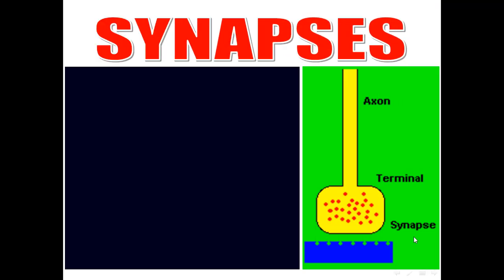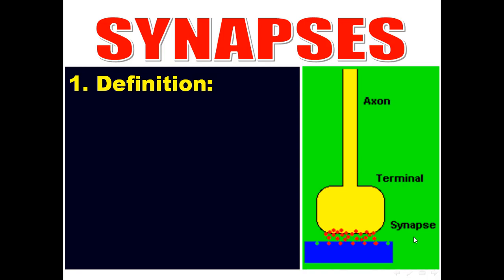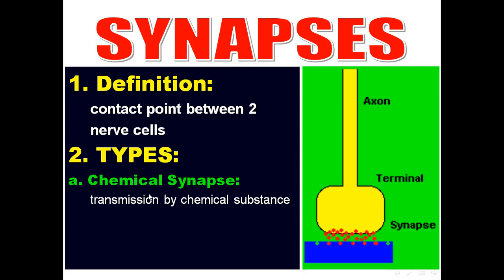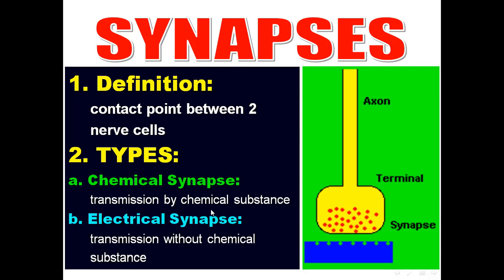A synapse is the contact point between two nerve cells. Synapses are divided into two types according to the type of transmission. If transmission occurs by a chemical substance, it is called a chemical synapse. If transmission occurs without a chemical substance, it is called an electrical synapse.